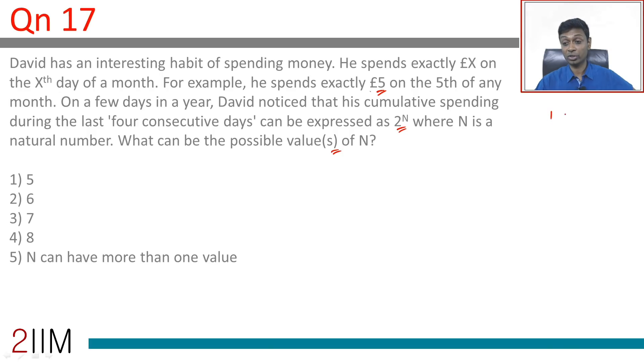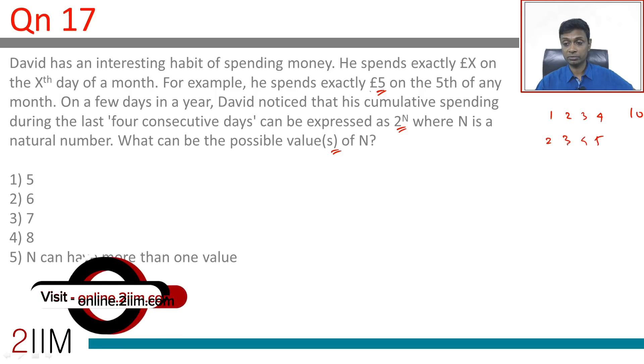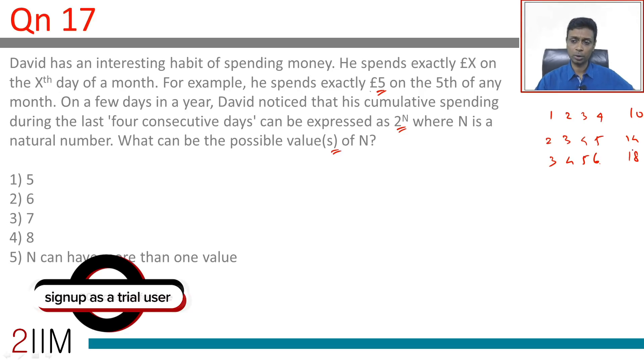Let's take the first four days: 1, 2, 3, 4 adds up to 10. Then 2, 3, 4, 5 is 14. Then 3, 4, 5, 6 is 18. These are all not powers of 2, so these are not the answer we're looking for.